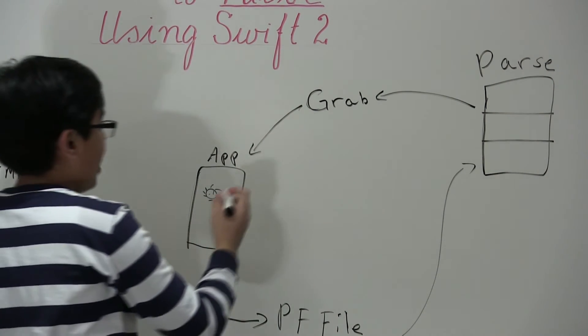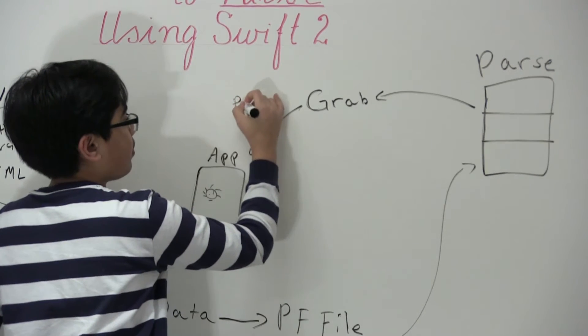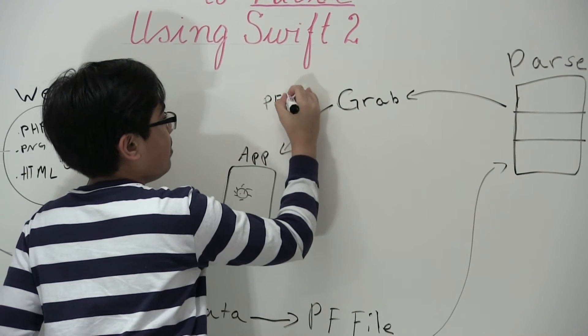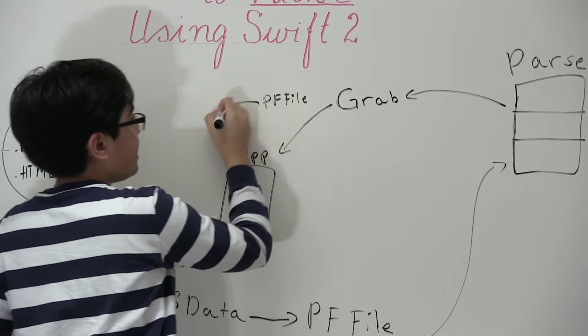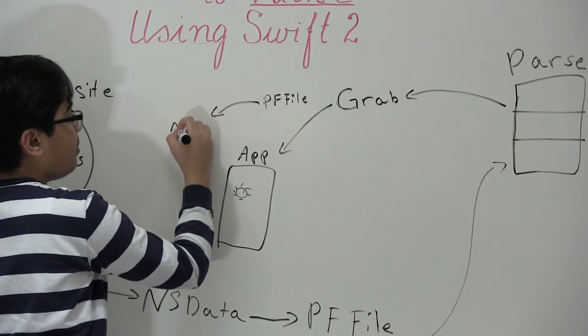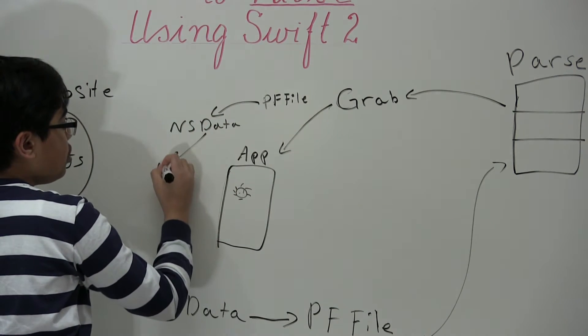And then we'll extract specifically the PFFile that we had uploaded. Convert this back into NSData.